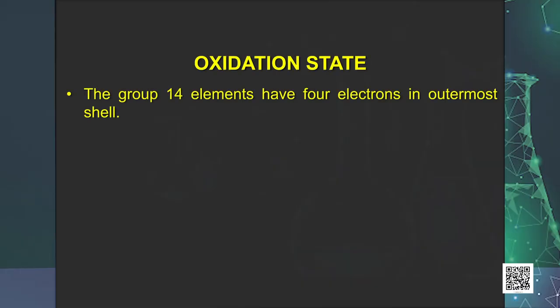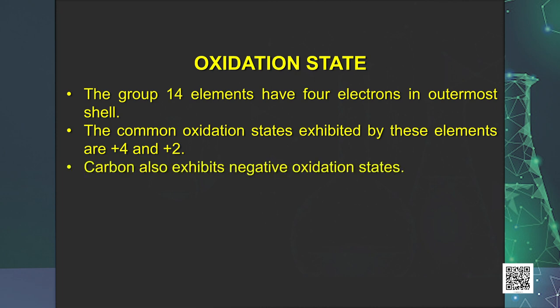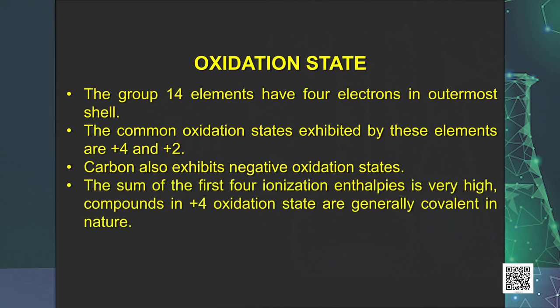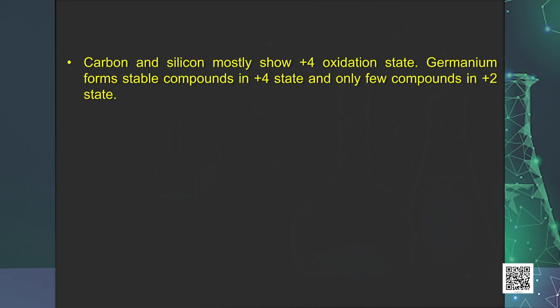The group 14 elements have 4 electrons in the outermost shell. The common oxidation states exhibited by these elements are +4 and +2. Carbon also exhibits negative oxidation states since the sum of first 4 ionization enthalpies is very high. Compounds in +4 oxidation state are generally covalent in nature. In heavier members, the tendency to show +2 oxidation state increases in the sequence: germanium < tin < lead. It is due to the inability of ns electrons of the valence shell to participate in bonding. The relative stabilities of these two oxidation states vary down the group.